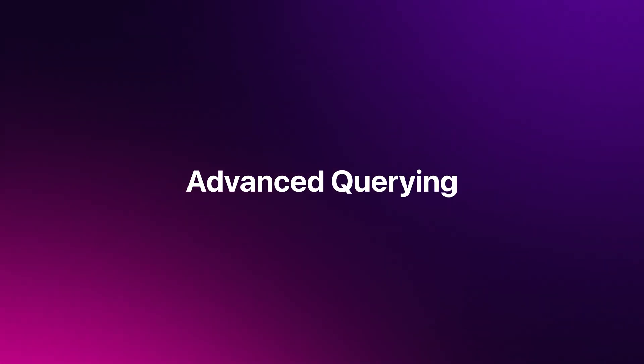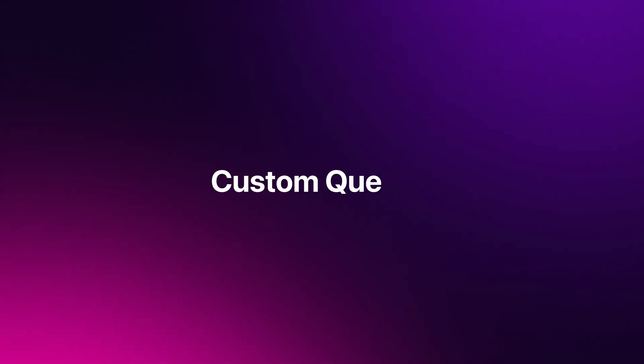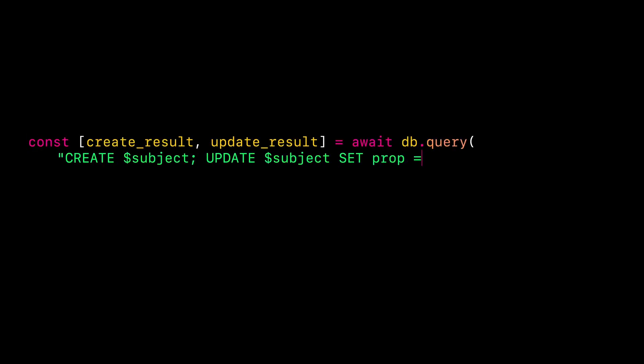Advanced querying. For more granular control and advanced use cases, we can also send custom queries to SurrealDB. For this, we can use the query method. By default, the query method works by passing a text query and parameters to it. The method always returns an array of results, as you can send multiple queries at once. To easily name the results of various queries, we recommend destructuring the response.